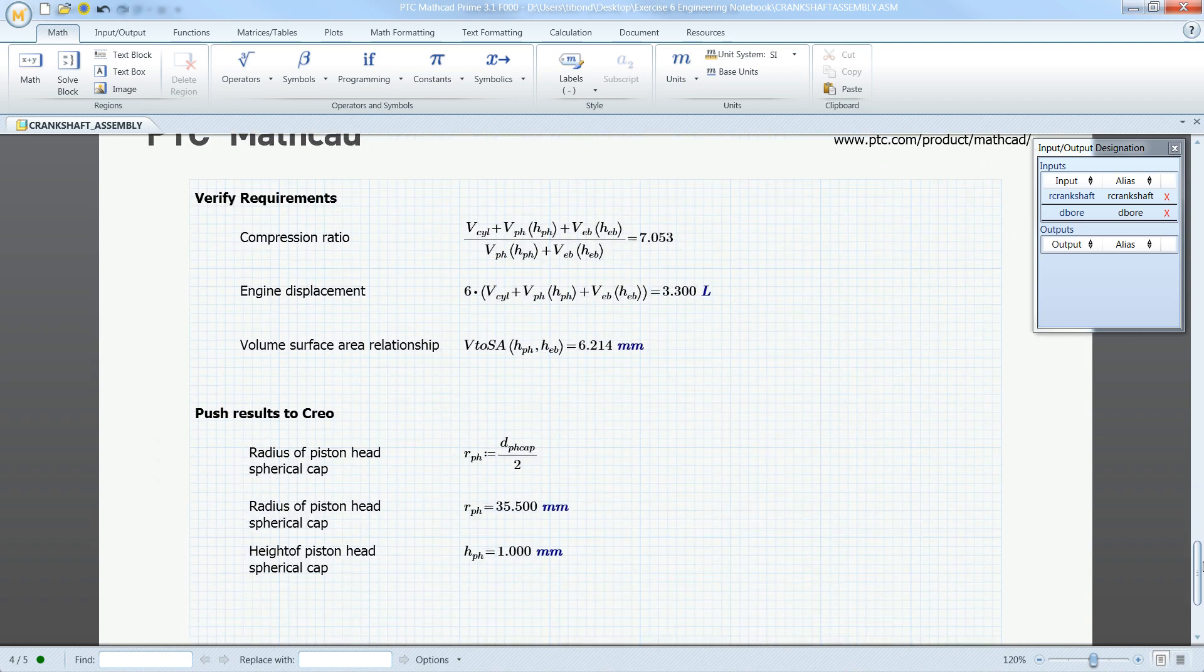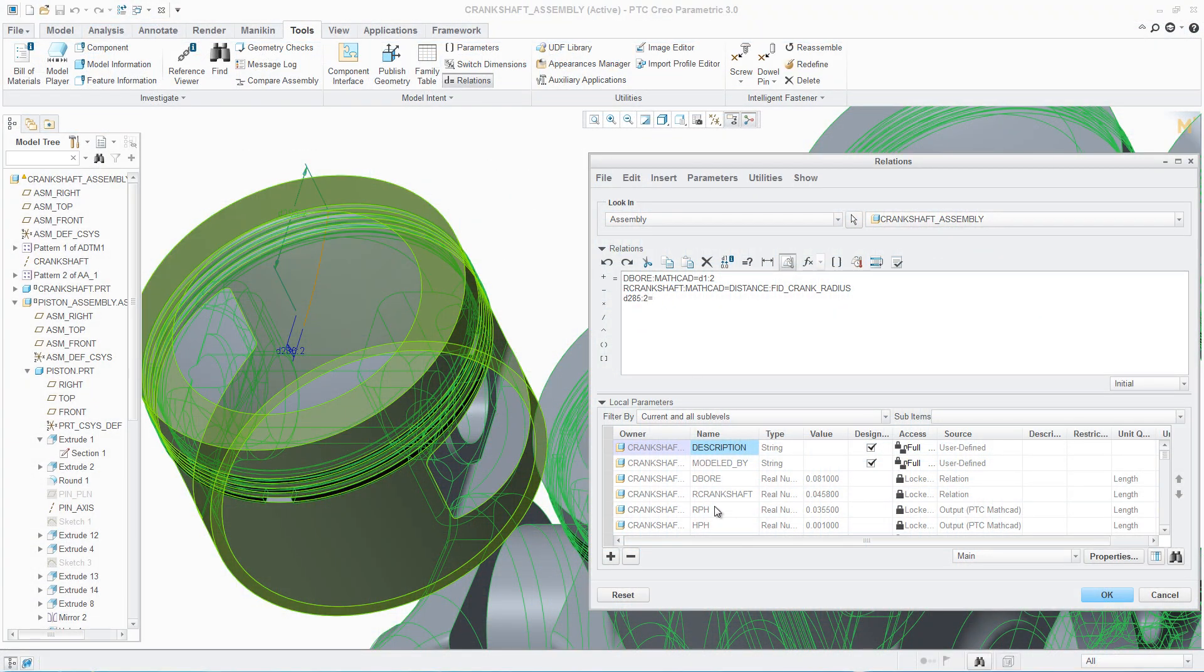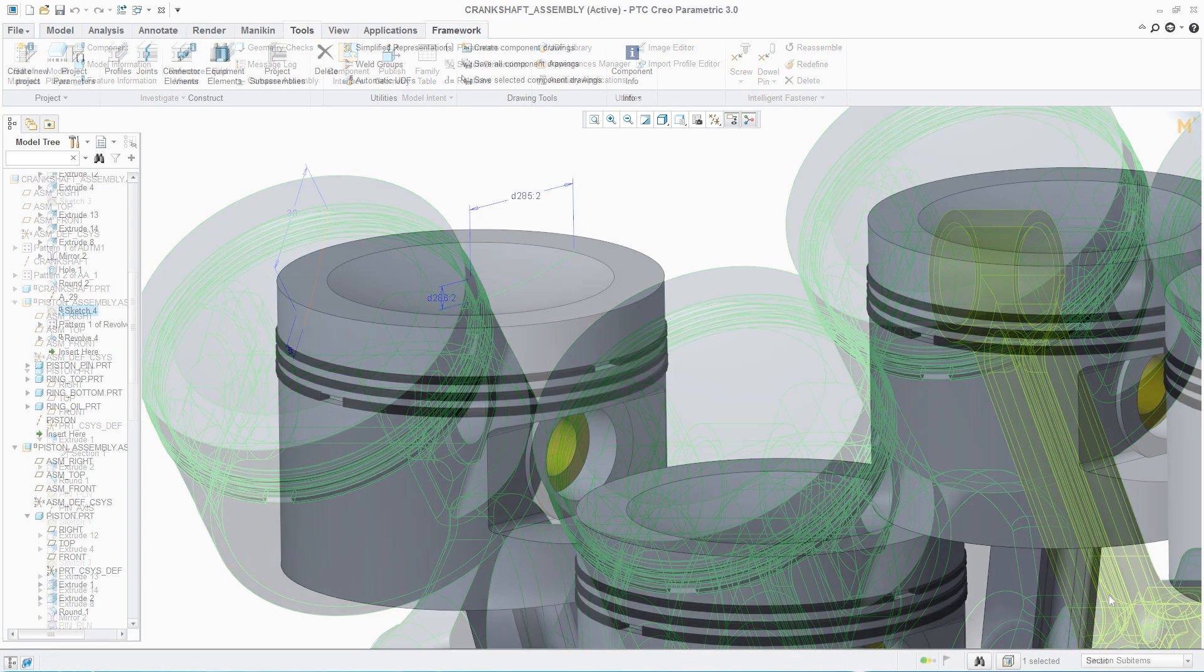At the same time, parameters from PTC Creo can be used to drive engineering calculations. This new ability to quickly and easily document engineering knowledge and design intent inside the PTC Creo model provides engineers with a powerful digital engineering notebook.